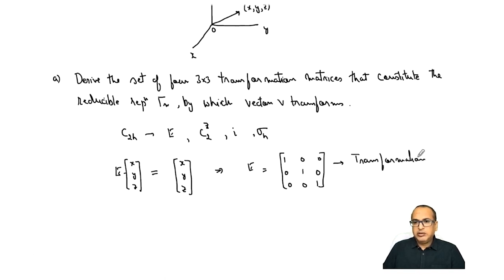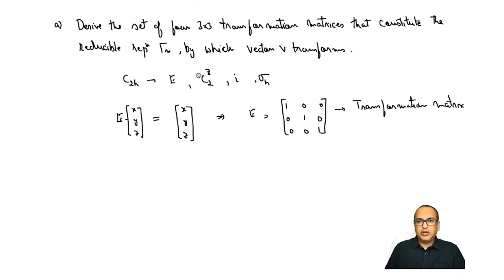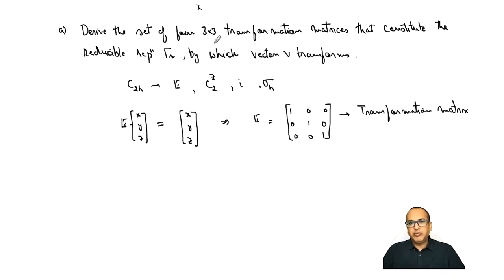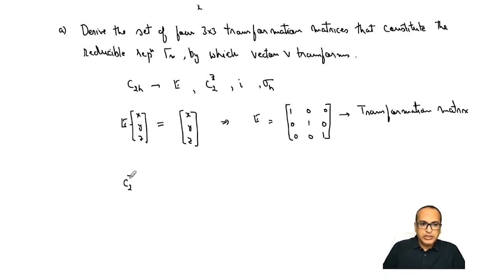Similarly, we have to calculate all four 3×3 transformation matrices. Because we are in the x, y, z system — a three-dimensional space — the matrices will be of order 3×3. The order can be lower depending on the dimensionality of the space. Now let's do the same for C2z.